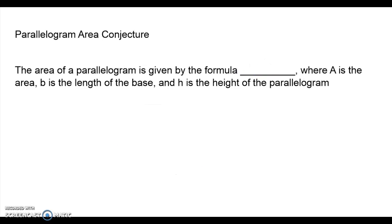Second conjecture is the area of a parallelogram. A parallelogram is very similar to a rectangle, but they're just kind of like tilted or slanted a little bit. But the formula is the exact same. A equals base times height, where A is the area, and B is the length of the base, and H is the height.